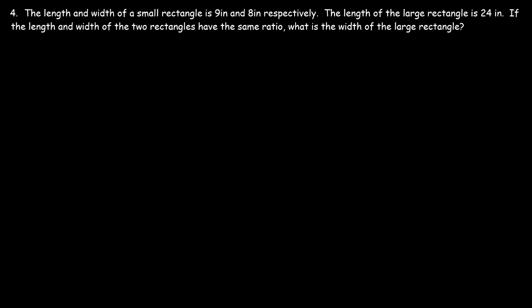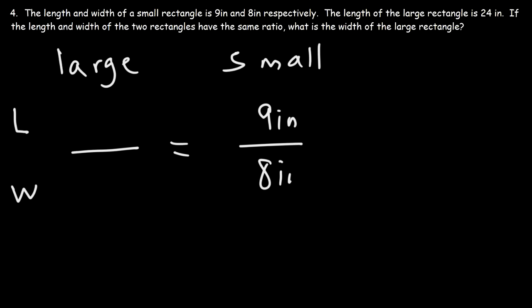Number 4. The length and width of a small rectangle is 9 inches and 8 inches respectively. The length of the large rectangle is 24 inches. If the length and the width of the two rectangles have the same ratio, what is the width of the large rectangle? Well, let's set up a proportion. So we have the large and the small rectangle. Now let's say the top portion represents the length of the two rectangles, and the bottom part of the two fractions represents the width. So the length and the width of the small rectangle, the length is 9 inches, and the width of the small rectangle is 8 inches. Now for the large rectangle, the length is 24. Our goal is to calculate the width of the large rectangle. So let's put in x.